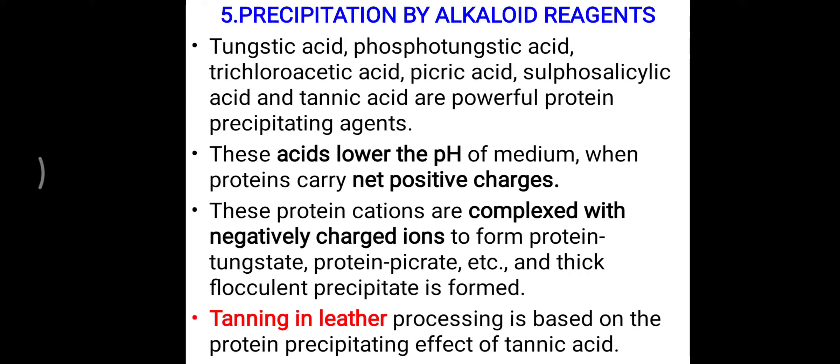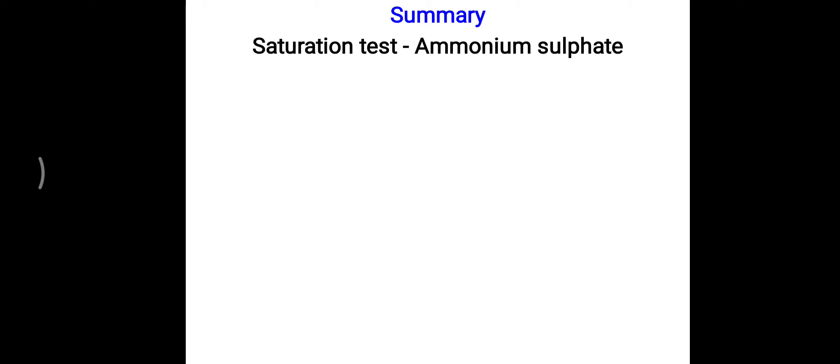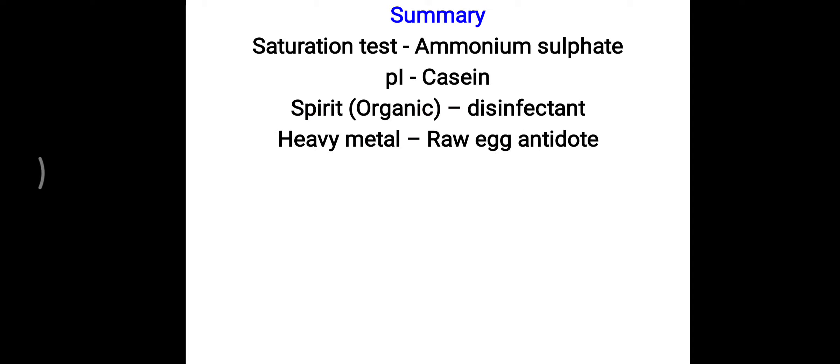In summary, for salting out, remember the saturation test: half saturation precipitates higher molecular weight proteins, while full saturation is needed for lower molecular weight proteins using ammonium sulfate. For isoelectric precipitation, the best example is casein. For organic solvents, spirit acts as a disinfectant. For heavy metal poisoning, raw egg is the antidote for mercury poisoning. Tanning of leather uses the alkaloidal reagent principle. These are all examples of precipitation reactions of protein.